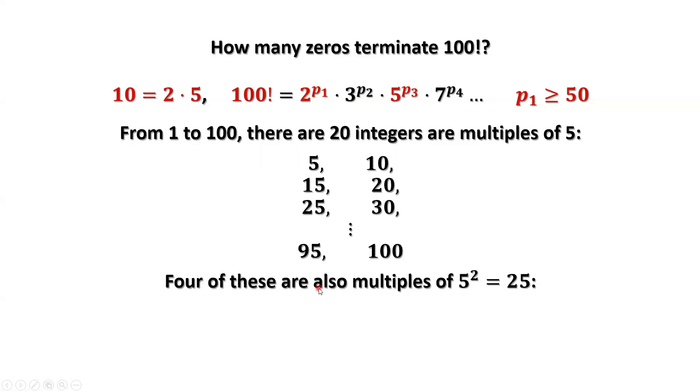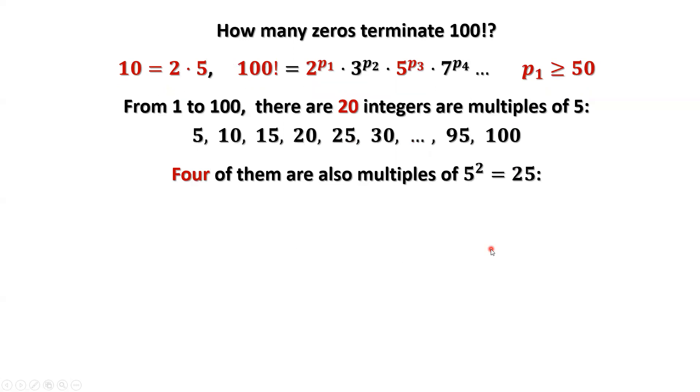Four of these are also multiples of 5 squared, which is 25. Why should we pay more attention to these four numbers? Because each contains 5 twice as a factor. For example, 25 equals 5 times 5. 50 equals 5 times 5 times 2.